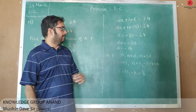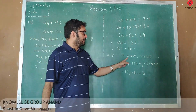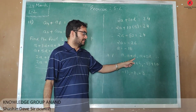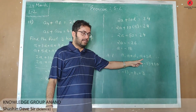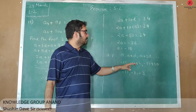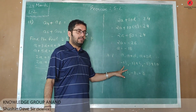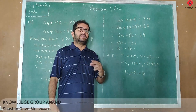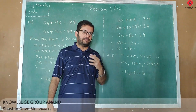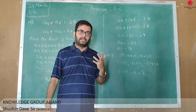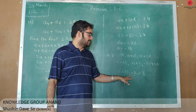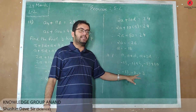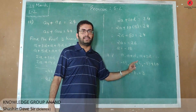The first three terms of the AP will be represented as A, A plus D, and A plus 2D. Substituting the values of A and D, we get the first three terms of the AP as minus 13, minus 8, and minus 3.